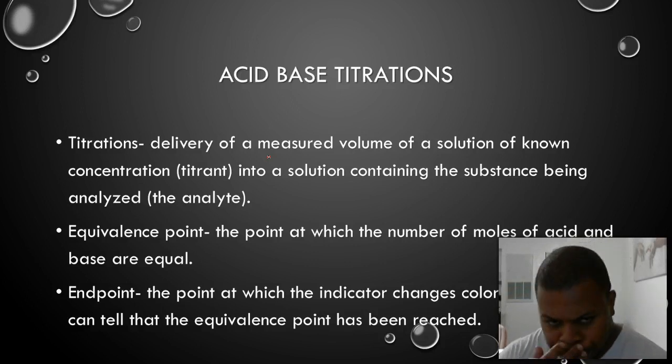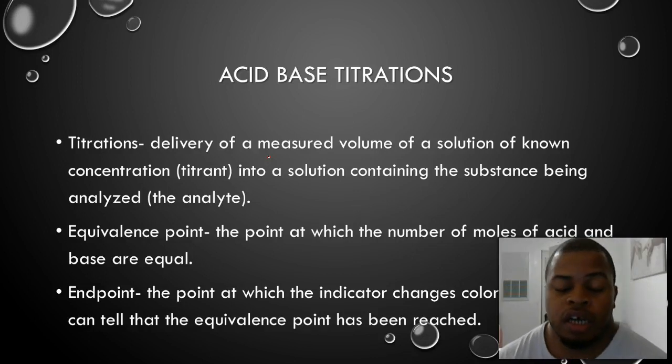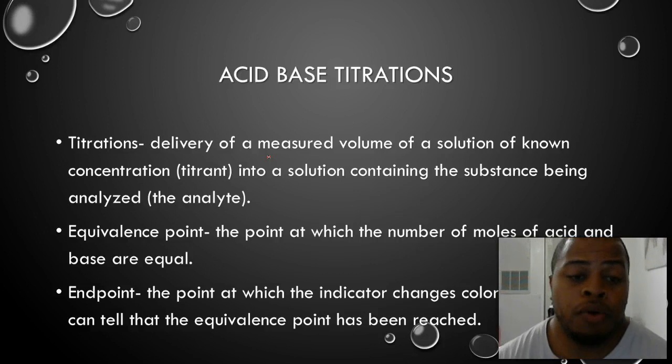Now, when we've reached what's called the equivalence point, that's when we know that there's the same number of moles of acid and base in the beaker that we may be using. We'll know this by looking at what's called the endpoint. And this is going to be, usually when we do a titration, we have some sort of indicator that we use, something that will alert us to the fact that we have reached the point where we are equal or a certain pH range. So, this will be called our endpoint.